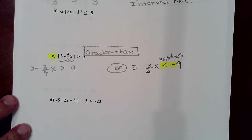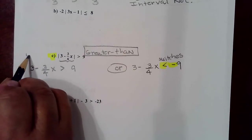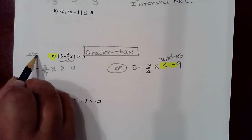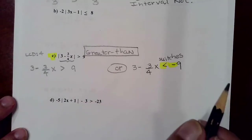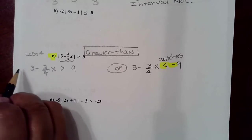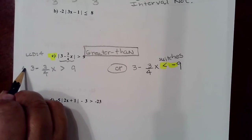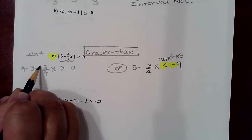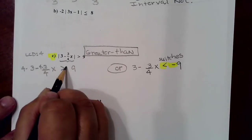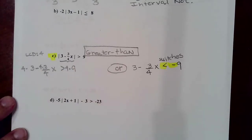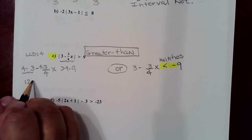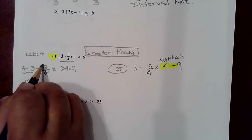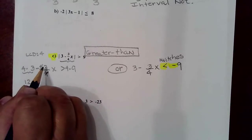In solving either one of these inequalities, you know that you have to get rid of the fractions. There's only one denominator, so the LCD is automatically that denominator. We're going to multiply everything by 4 in order to clear out this one fraction, because you can't just multiply one term by 4 — everything has to be multiplied by that same number. On this first product you're going to have 12, then the fours cancel leaving you with negative 3x.